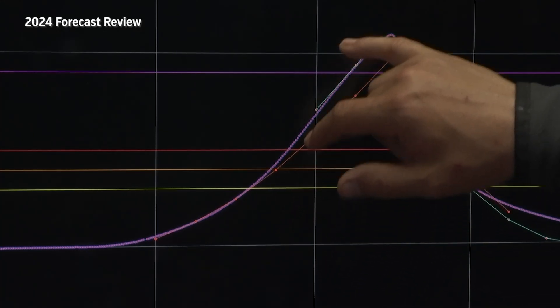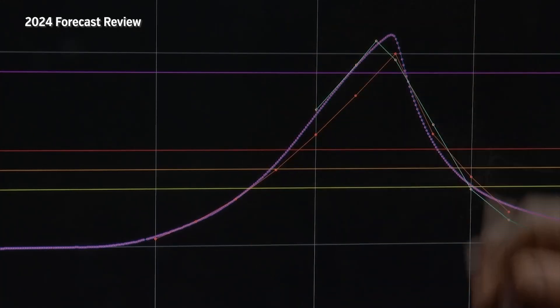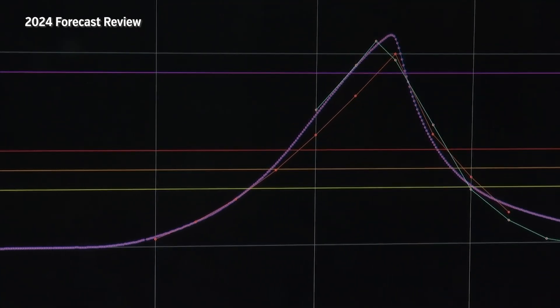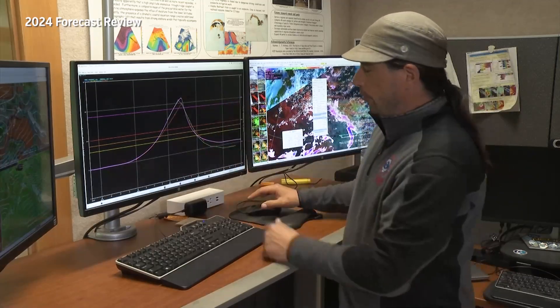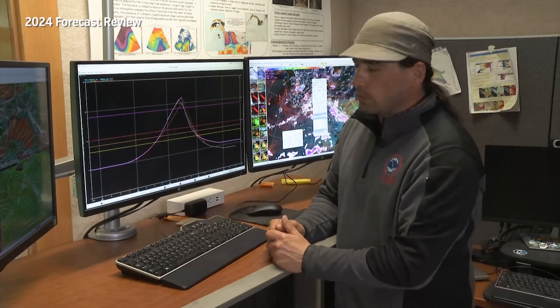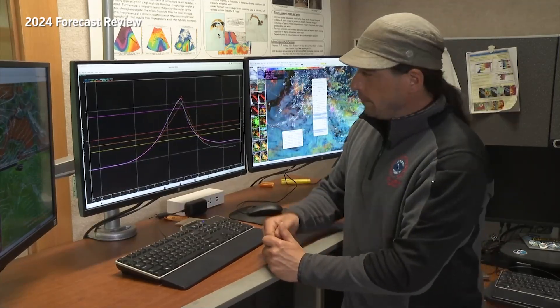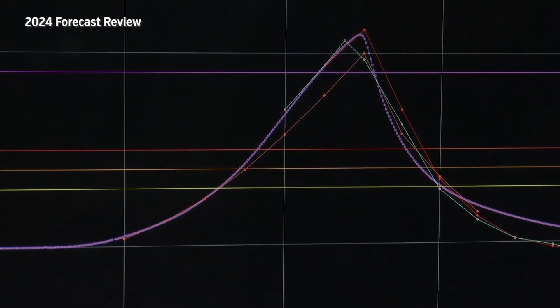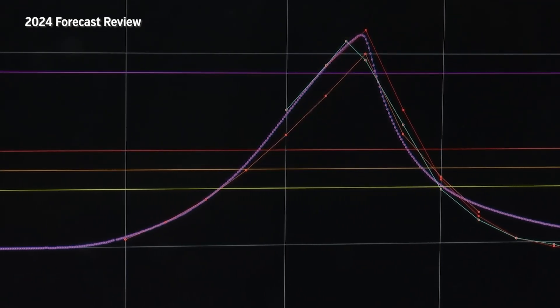This teal line here is our adjustment to the forecast. We were able to bring it up higher and then also bring it in closer. This is what we were able to provide to the public last year. We made another slight adjustment in the evening timeframe. This is what we put out about six hours before the peak.